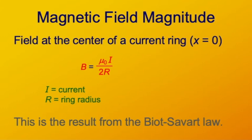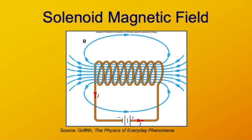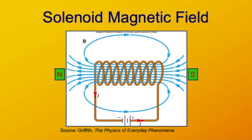Another current configuration used a lot in real life is the solenoid, where you have a number of loops in a helical fashion with current flowing through them. For an infinite solenoid, the field inside is uniform and directed parallel to the solenoid axis, while the field outside is zero. In a real solenoid, the field inside is fairly uniform, very low outside, and highest along the axis. It produces a dipole-looking field with a north pole on one end and a south pole on the other.